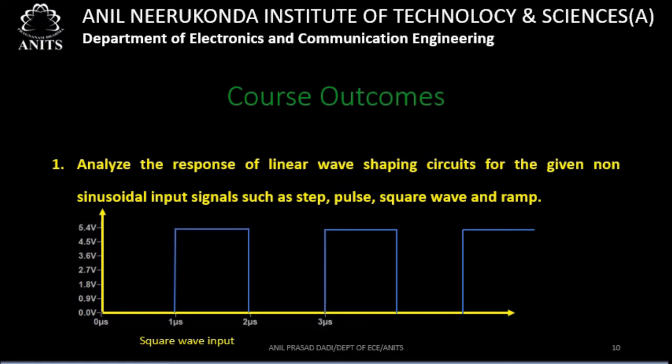Overall, course outcome 1 expects that you have the ability of analyzing the response of linear wave shaping circuits — specifically RC low pass filter and RC high pass filter — for given input signals that can be step input, pulse input, square wave, or ramp. This is the first course outcome.